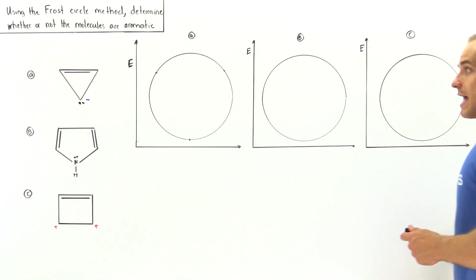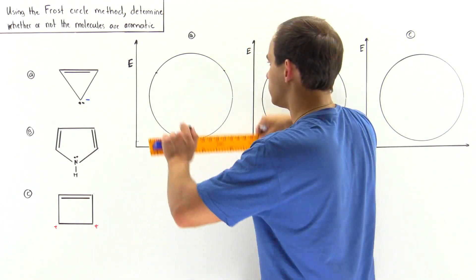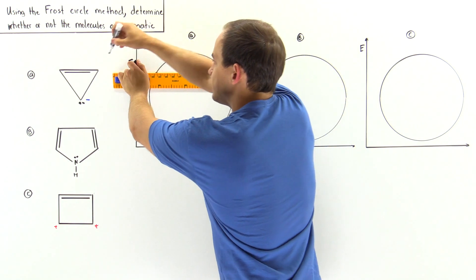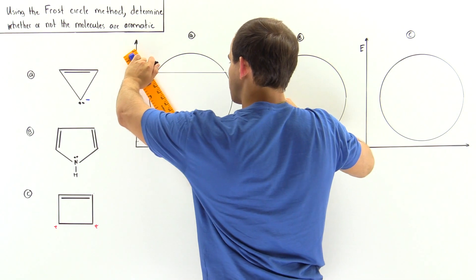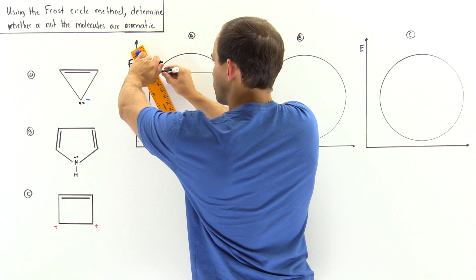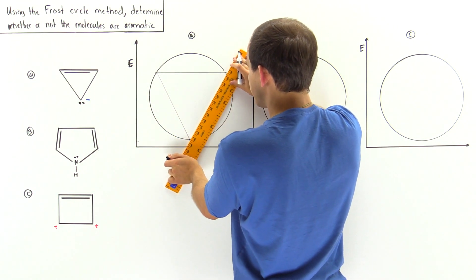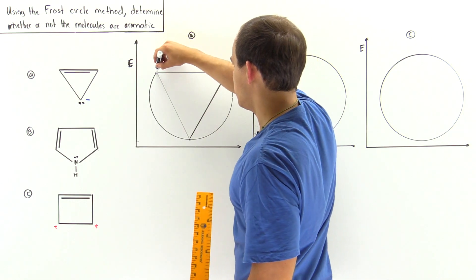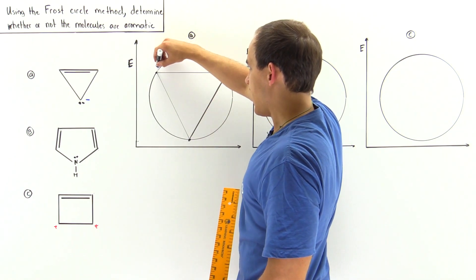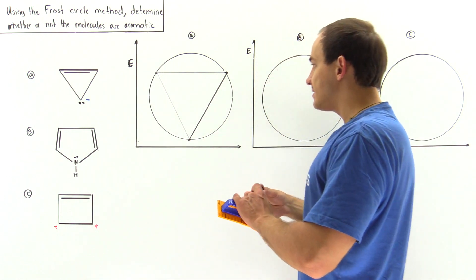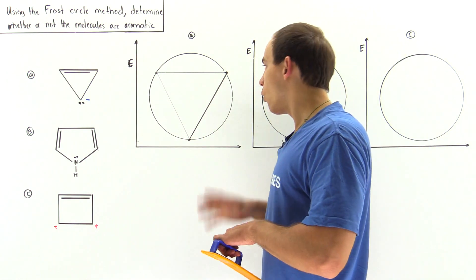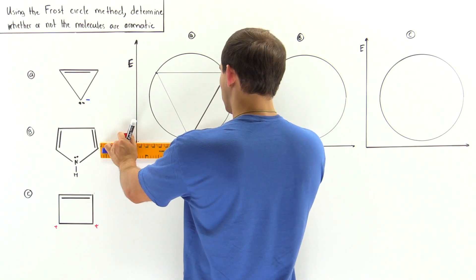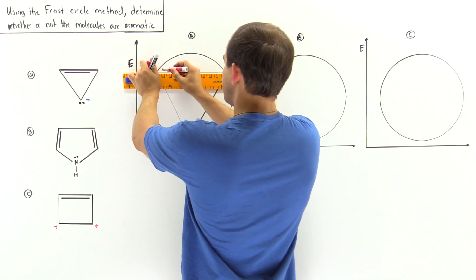Let's take our ruler and connect our lines. We have the base of the triangle here, the vertex at the bottom, and we connect the other two sides to get our diagram. The points of intersection each designate a pi molecular orbital — we have one pi MO on the bottom and two on the upper level.